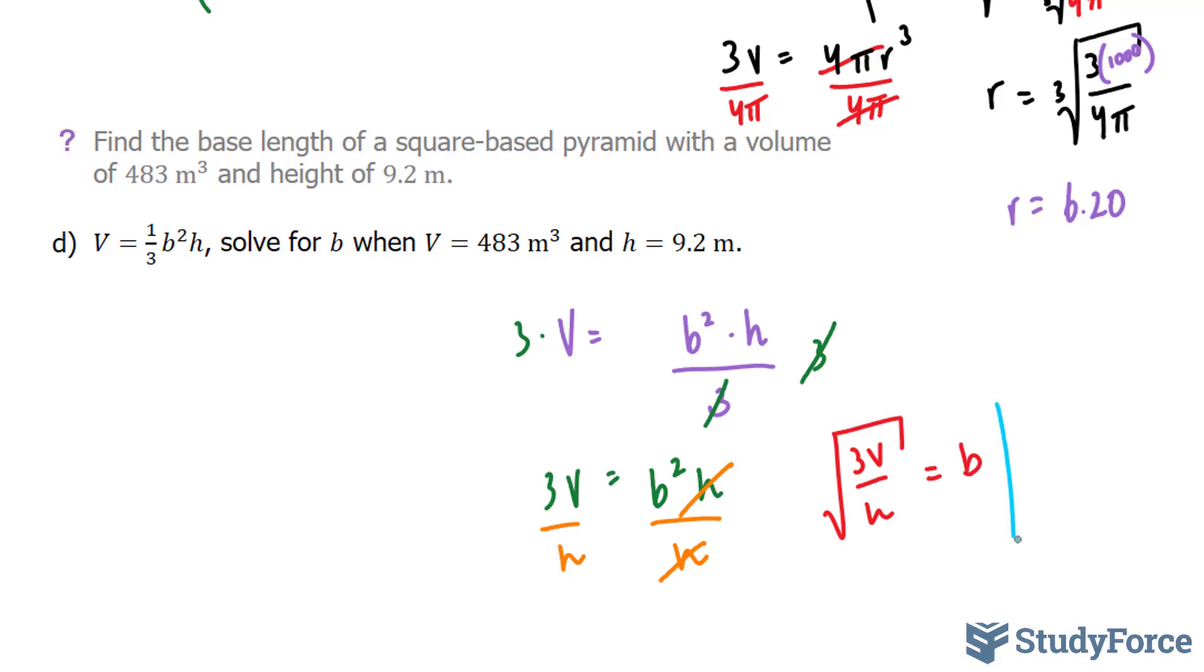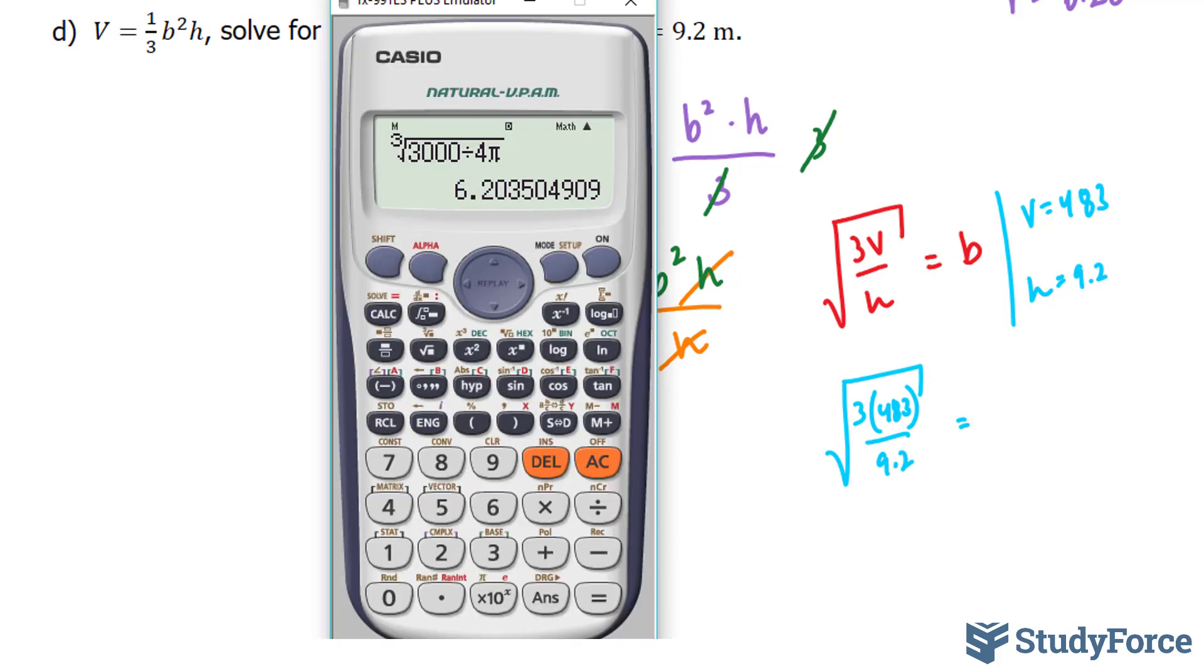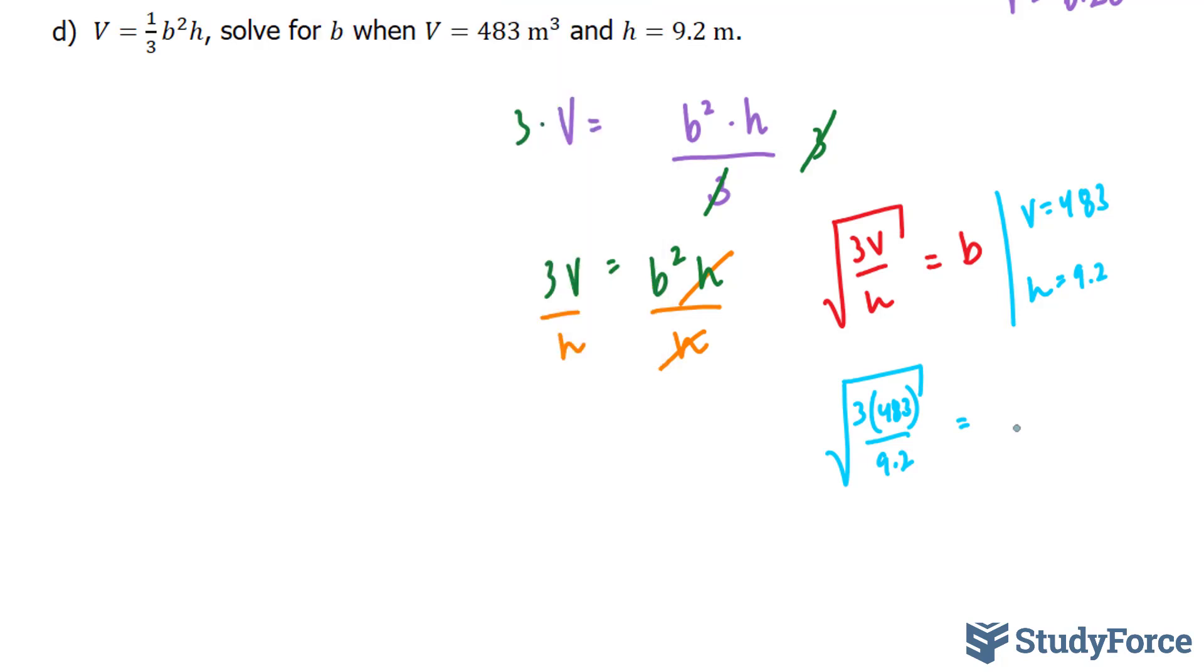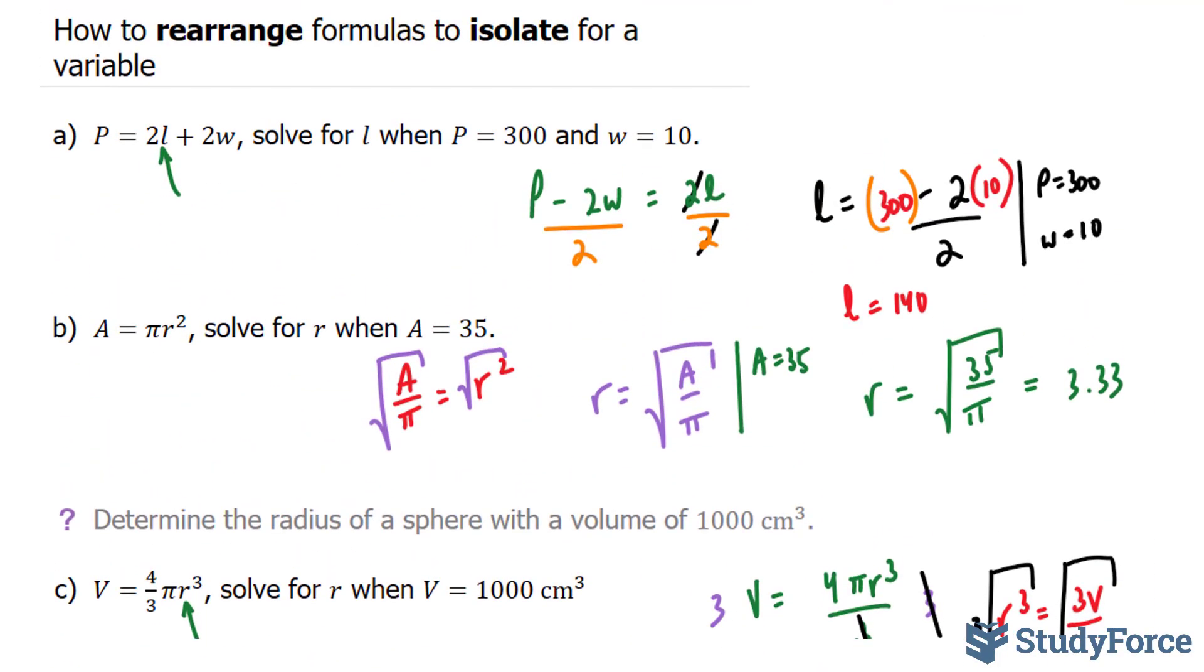Now, I'm going to substitute what they have given me. V is equal to 483. H is equal to 9.2. The square root of 3 times 483 over 9.2 will give me my base value. The square root of 3 times 483 divided by 9.2, approximately 12.54 meters. So there you have it, four examples on how to rearrange formulas to isolate for any given variable.